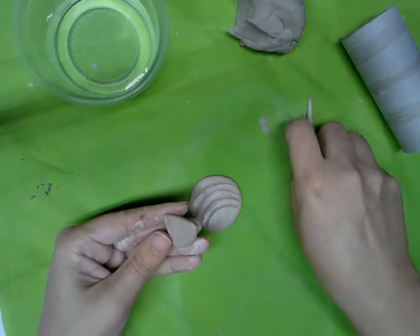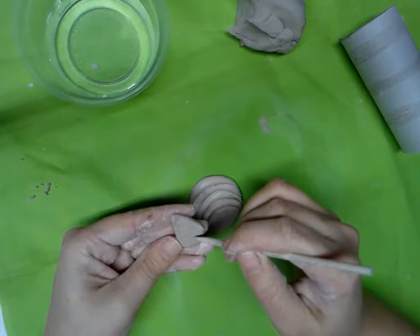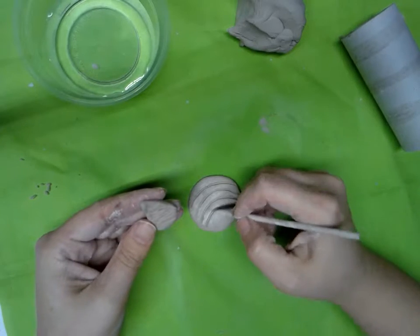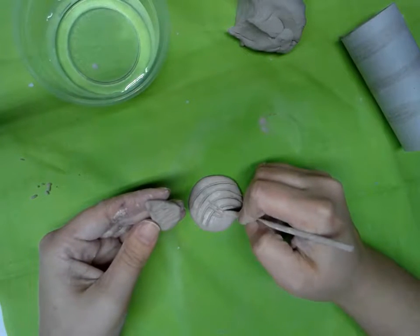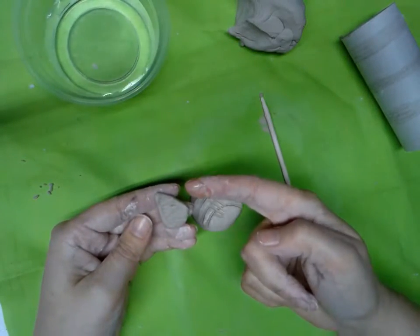And then before I put it on there, I'm going to make some little lines on the back of it. Little lines on the back of it like that. And those will help it stick to the clay. And I'm going to draw little lines where I'm going to stick it. Little lines like that.